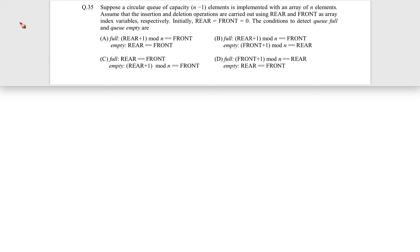Let us see this question. This question came in GATE 2012 for two marks. The question is: suppose a circular queue of capacity n minus 1 elements is implemented with an array of n elements. So, a circular queue is there whose capacity is n minus 1 elements but it is implemented with an array whose size is n elements.